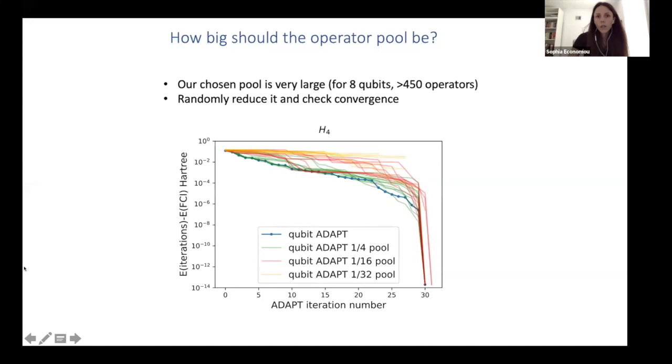And then the next concern should be how big should this operator pool be? Because if your pool is chosen to be too large, you need too many of these intermediate measurements. So what we did is we started from a chosen pool from eight qubits, which is more than 450 operators. And then we just started reducing it and we checked convergence for several examples. And we consistently saw that it performed well until we chopped off too many.